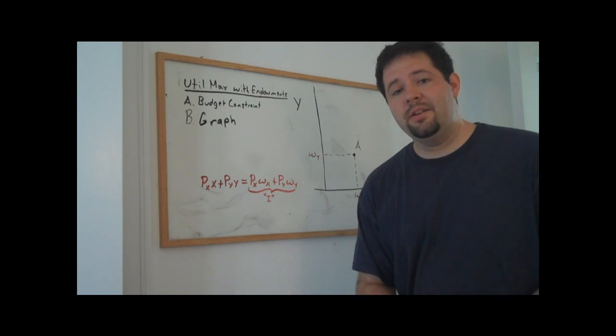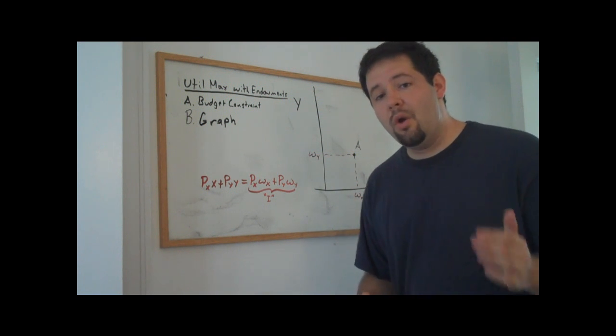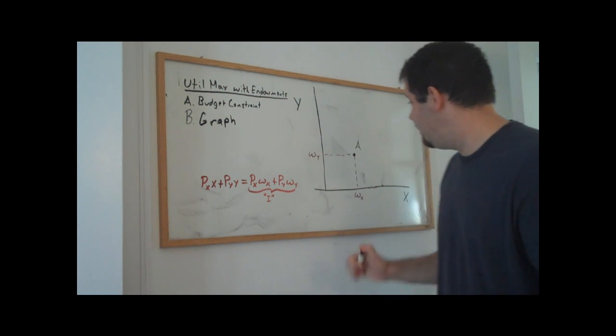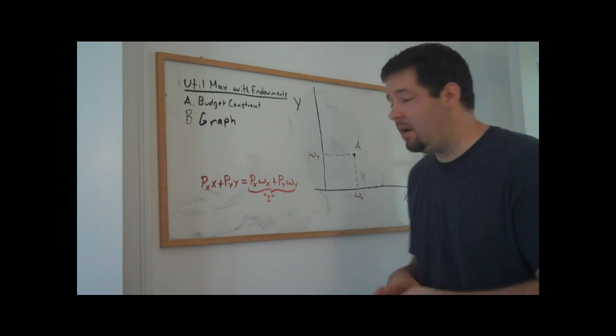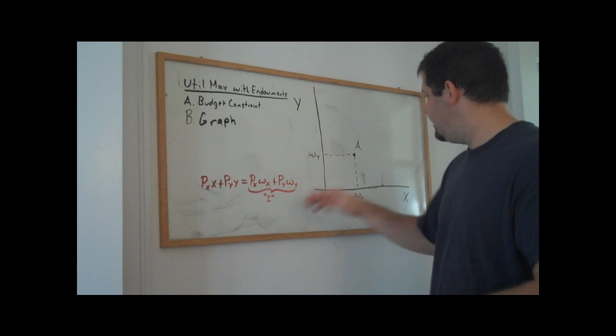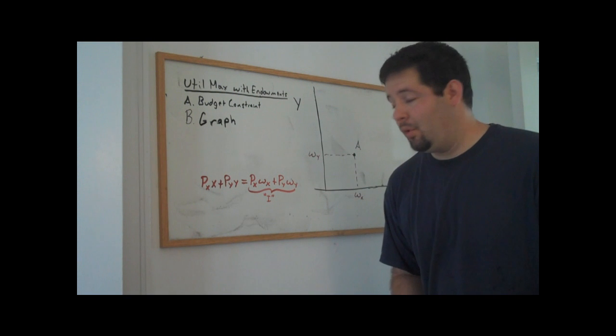But notice one additional thing here is that we actually know a point on the endowment economy budget constraint. It's the endowment point. No matter what the prices are, this consumer is going to be able to afford the endowment point. And so no matter what the prices are, the budget constraint has to go through the original endowment point.